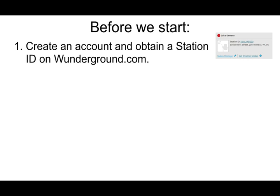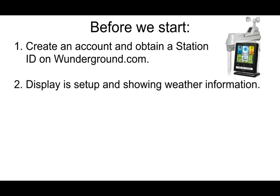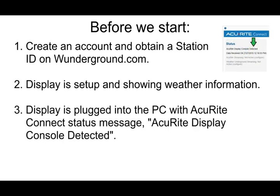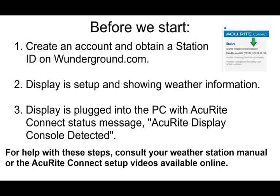Before we get started, you will need to create an account and obtain a station ID on WeatherUnderground.com. Your weather station display should be set up with a good connection to the outdoor sensor and showing weather information. The display should also be plugged into your PC and linked with Accurate Connect with the status message 'Accurate Display Console Detected.' You are now ready to begin.